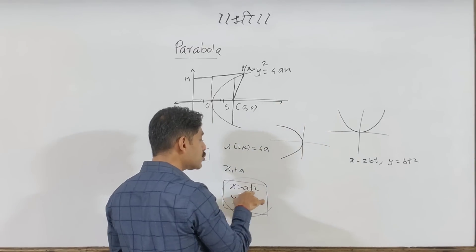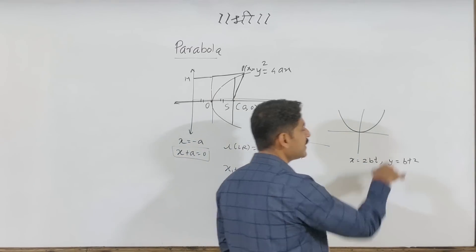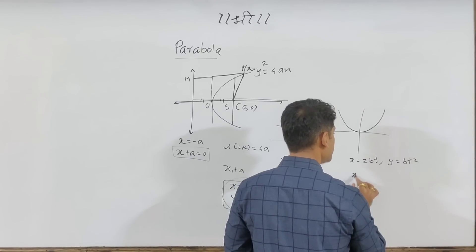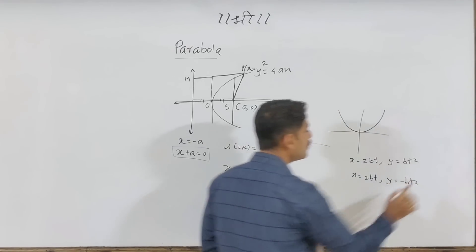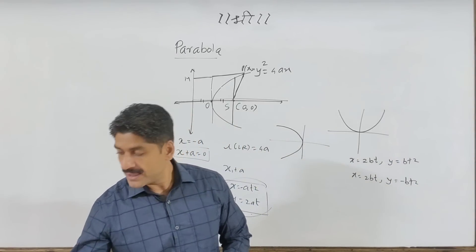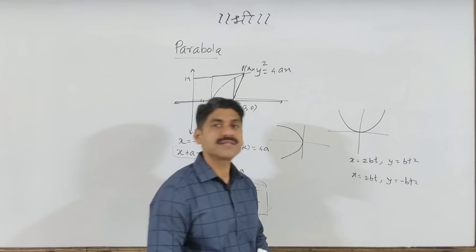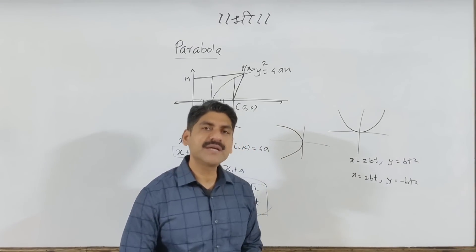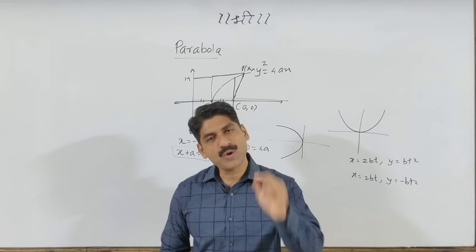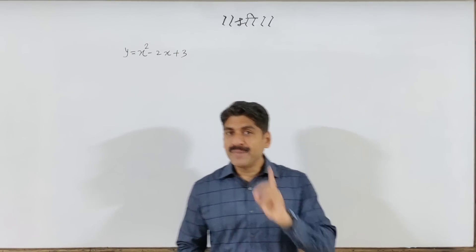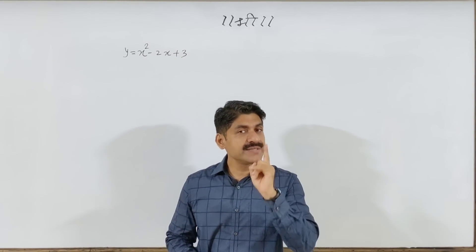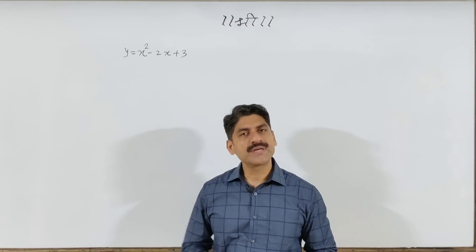For the downward opening parabola, x equals at squared and y equals bt squared, where the downward direction applies. Now we will talk about two types of problems. When the vertex is at the origin, it is very easy — just compare with the standard equation. But when the vertex is not at the origin, that type of problem is important.